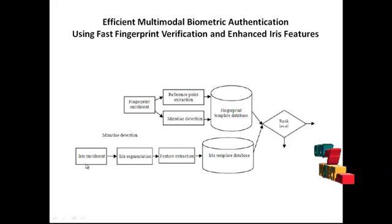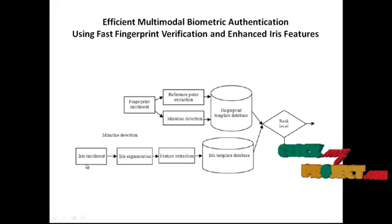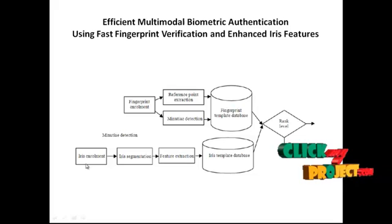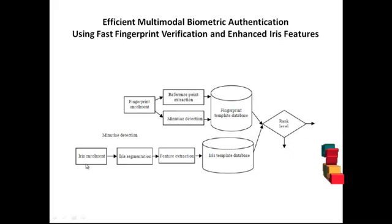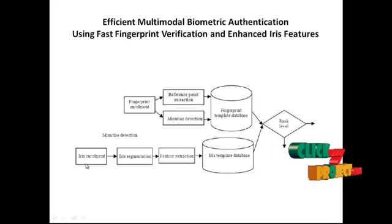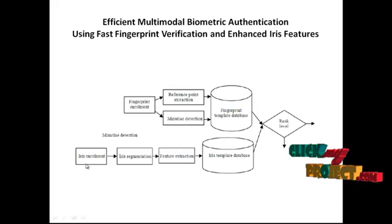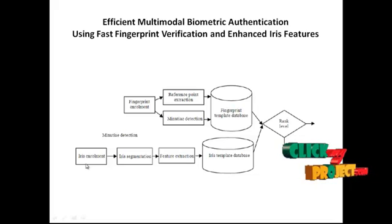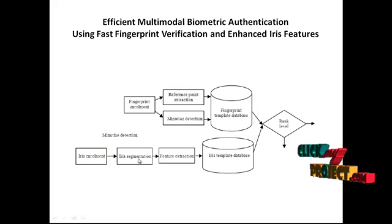Fifthly, the skeletonization of the iris is done to make the terminations and bifurcations clearly visible. The thinned iris is then subjected to minutiae extraction. At the end of this step, we obtain the iris segmented.